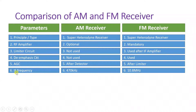Regarding intermediate frequency (IF): with an AM receiver the IF frequency is around 470 kilohertz, while in the case of an FM receiver the IF frequency is 10.8 megahertz.